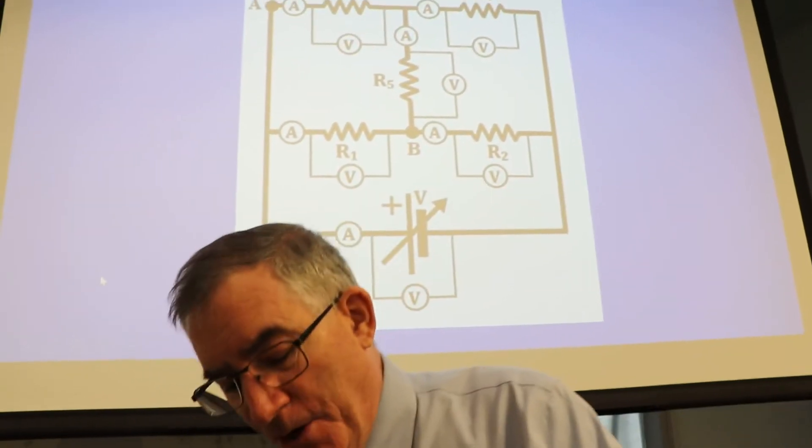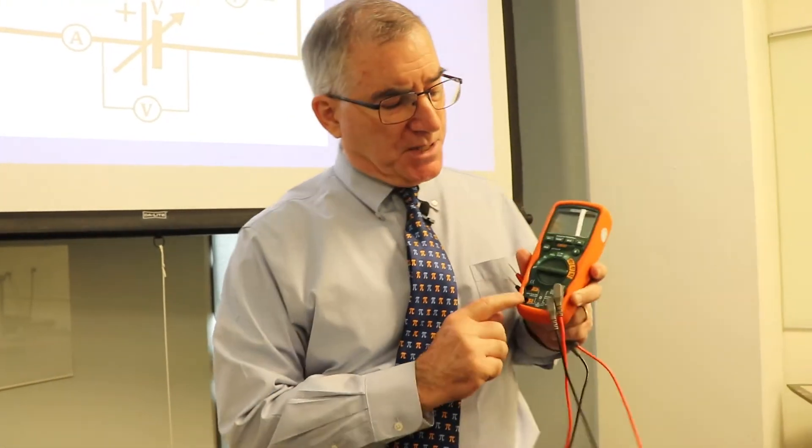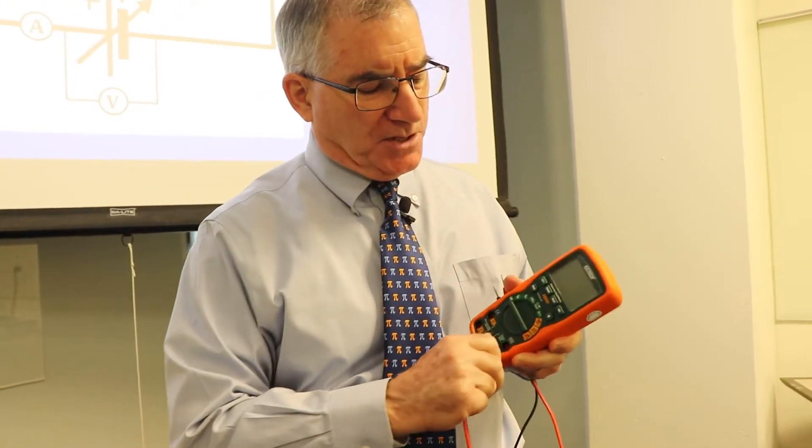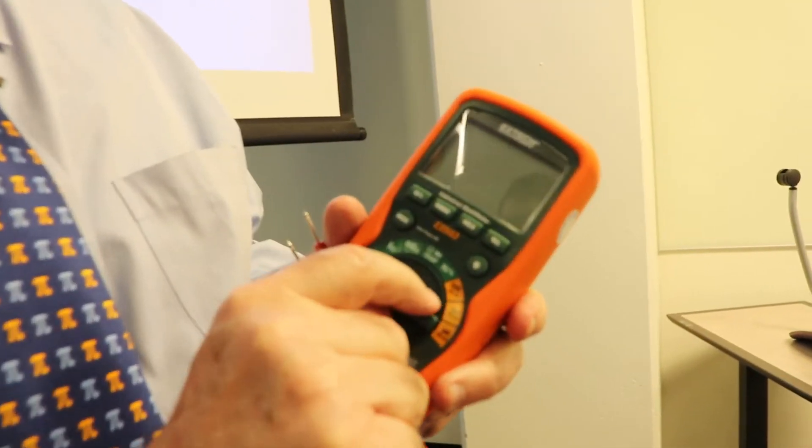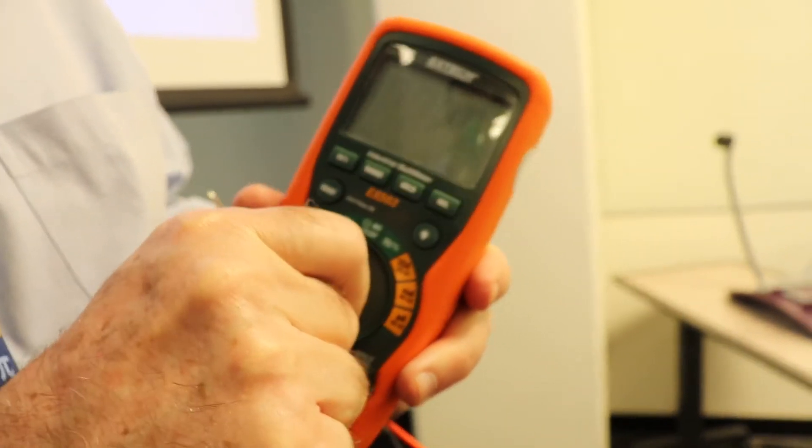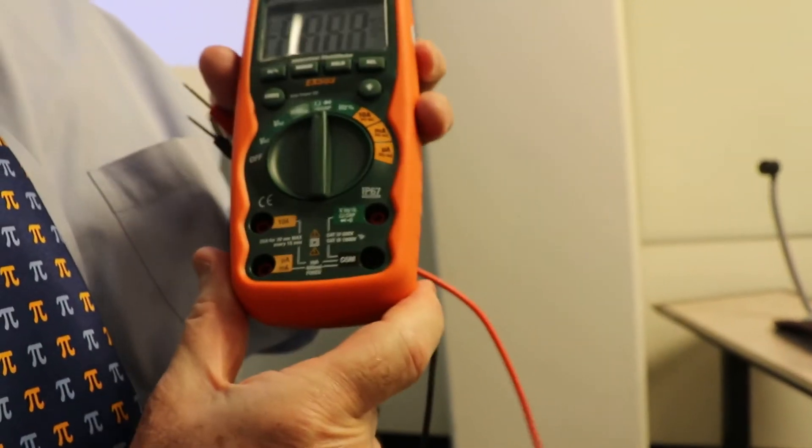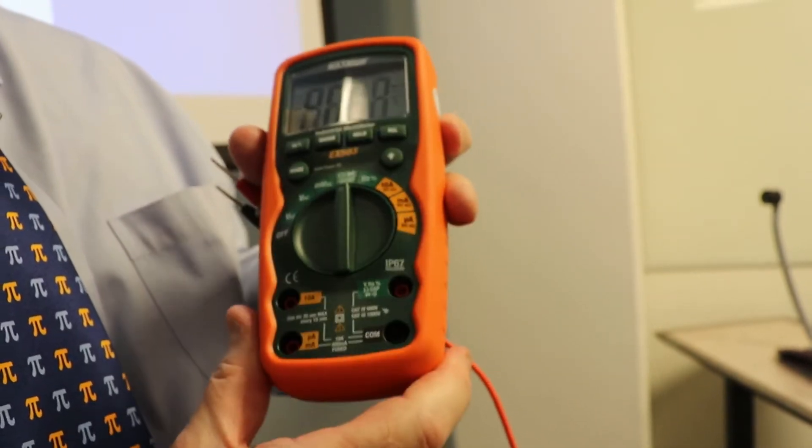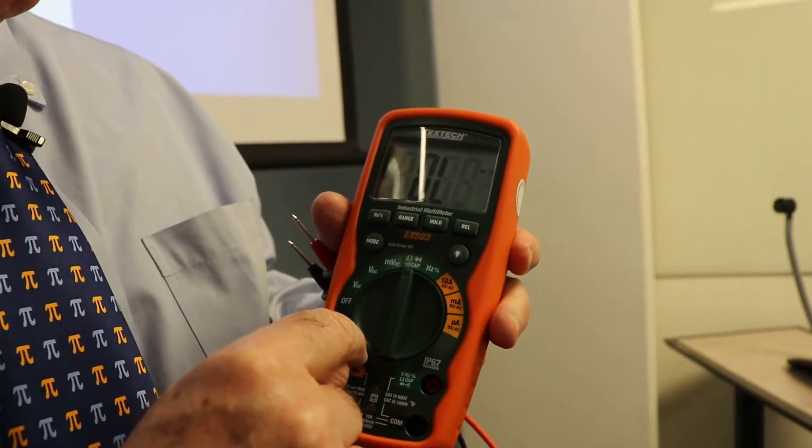This is what the multimeter looks like. It's got two sides. It's got a bunch of different options you can choose from. The first one is to measure the resistance, called an ohmmeter. This is called a DMM, which is a digital multimeter, which means it's got many different meters built into it.